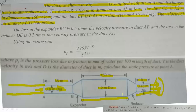Let us convert the velocity into meters per second. Velocity in section number 1 — let us mark AB as section number 1. So V1 equals 600 meters per minute, which converts to 10 meters per second.